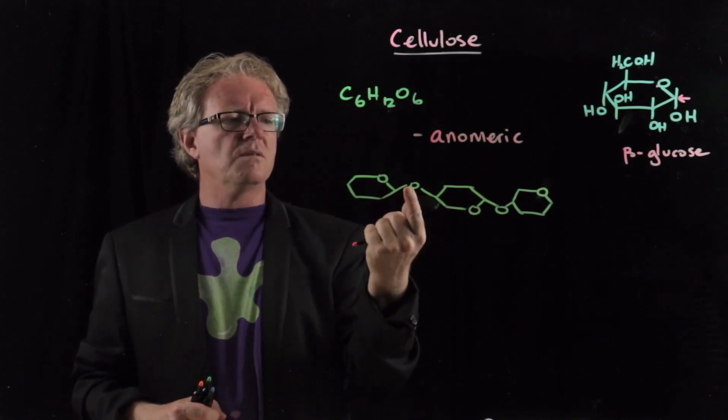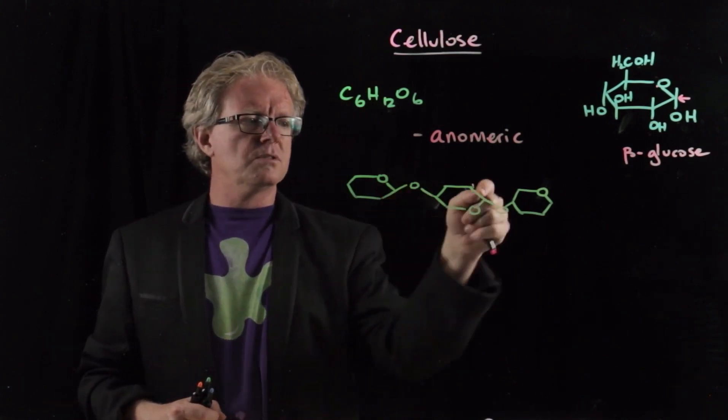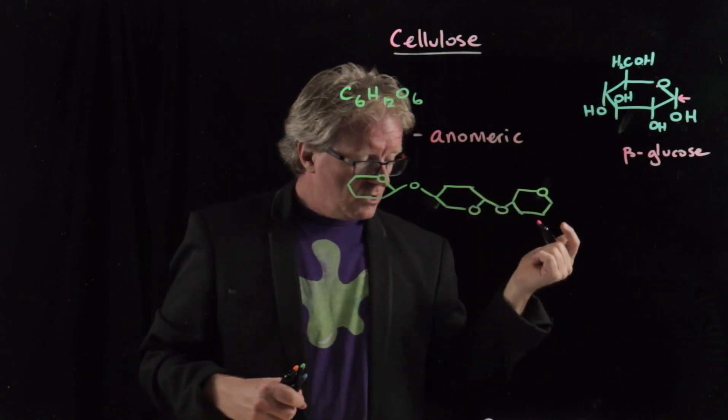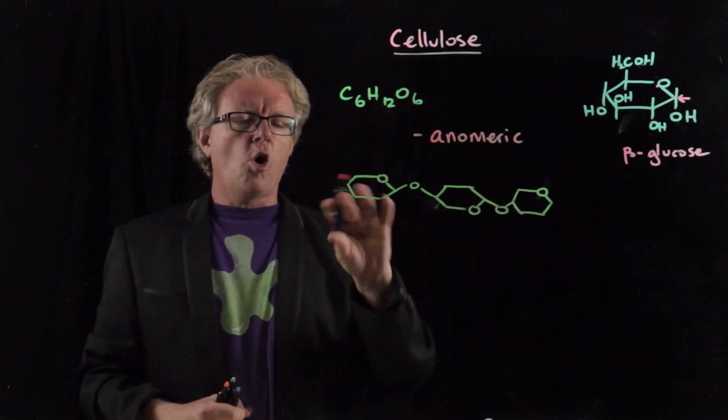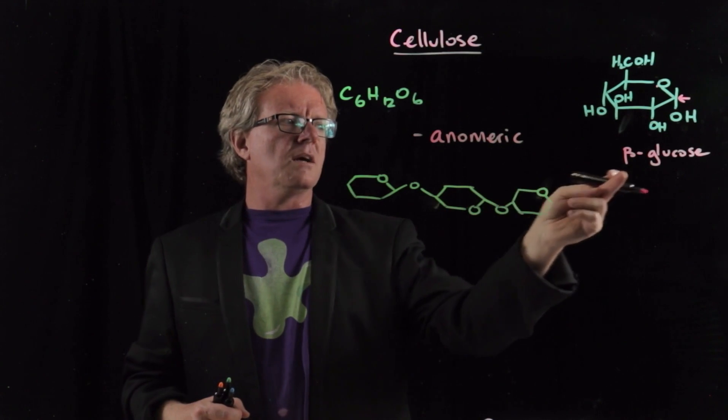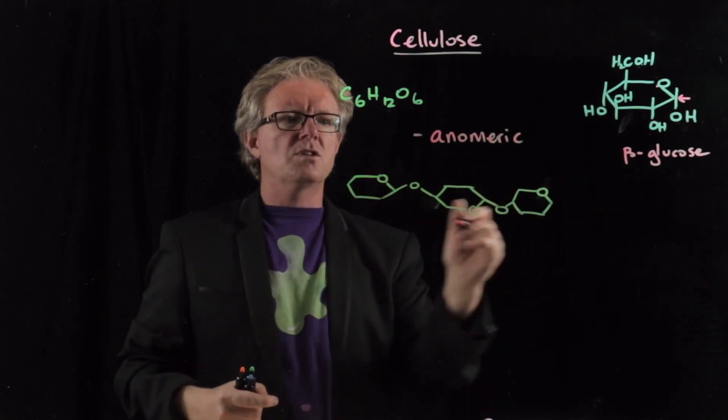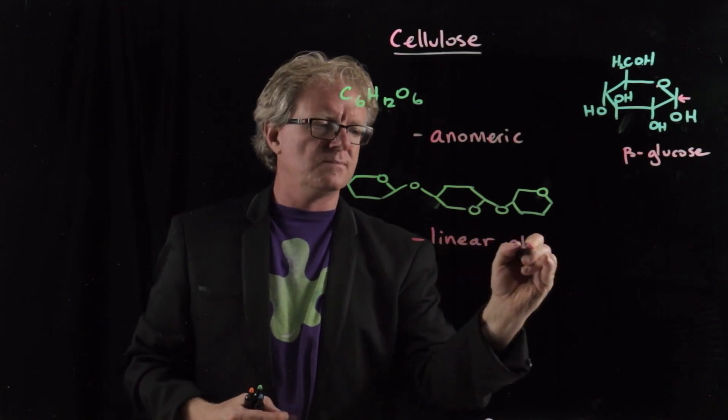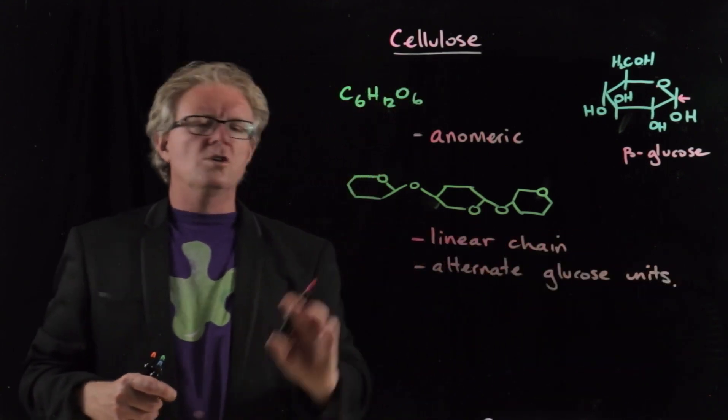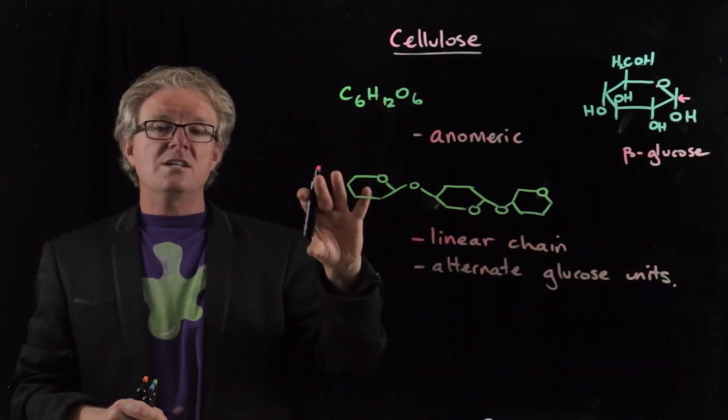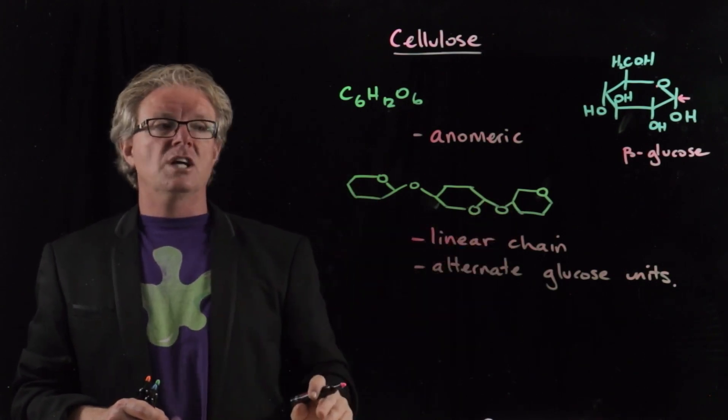You'll notice that the bonding we've got here, the oxygen is pointing upwards, pointing downwards. This is the alternate forms where we get beta-glucose flipping around, and that results in a linear chain. Alternate glucose units are arranged like that, forming a nice linear chain.